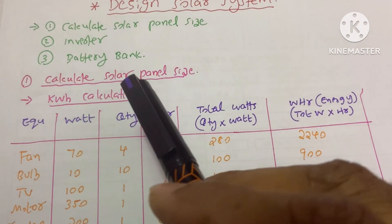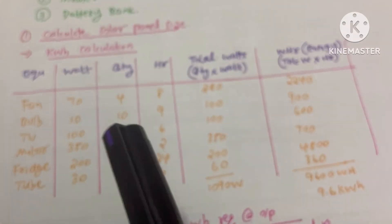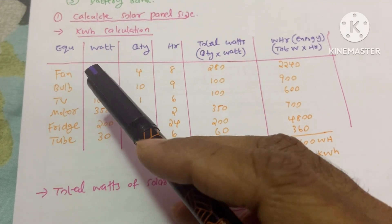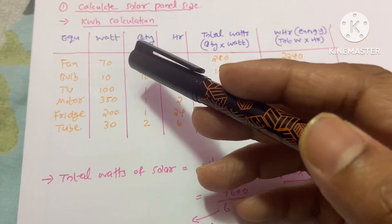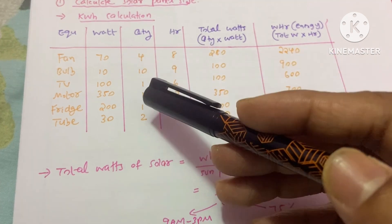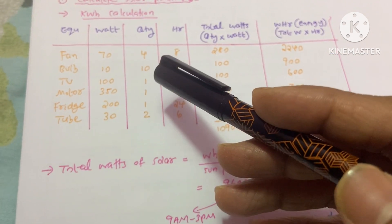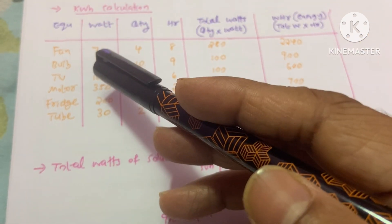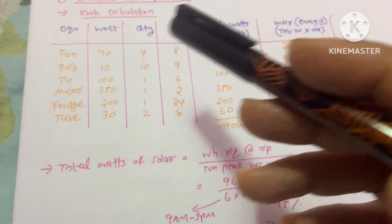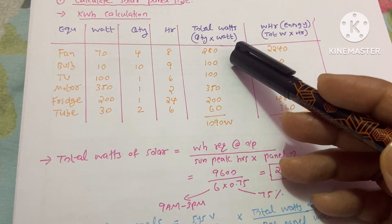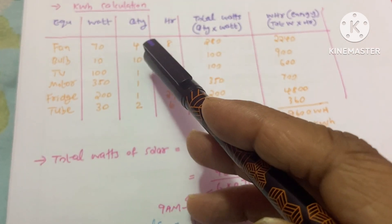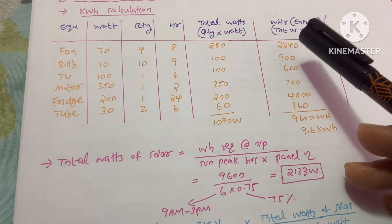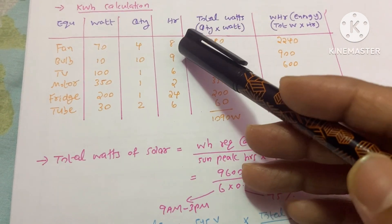The first calculation is solar panel size. For that, I need to calculate the kWh — the energy of your system in kilowatt hours. In my home there are various equipment with different wattages and quantities: for example, four fans and ten bulbs. I use my fan for eight hours per day. Total watts equals quantity multiplied by watt, and watt hour equals total watts multiplied by hours.